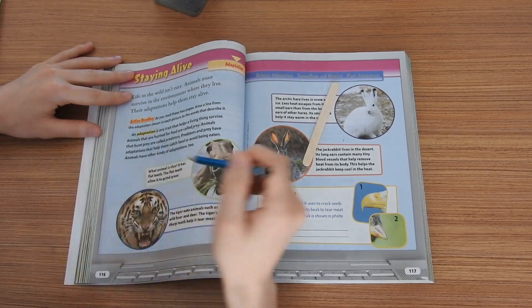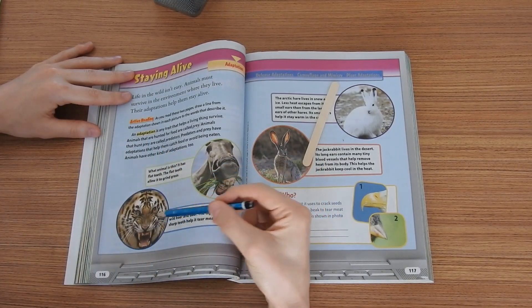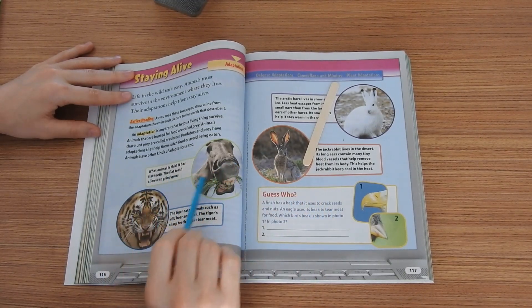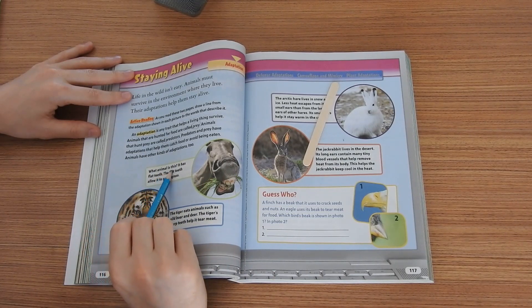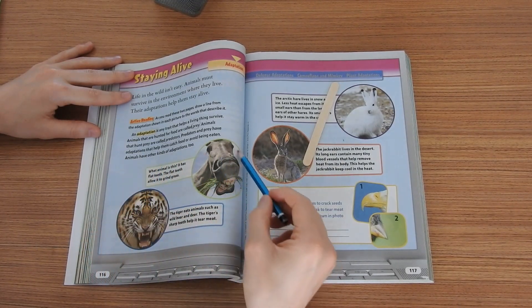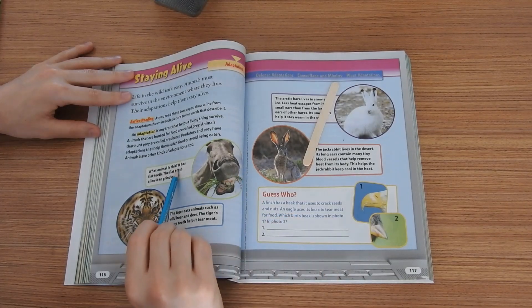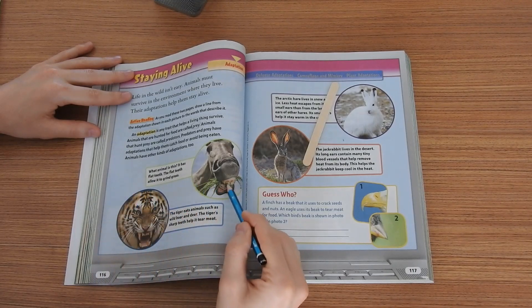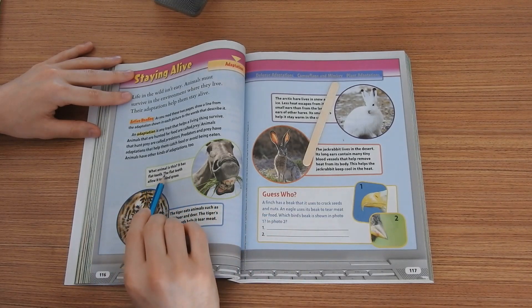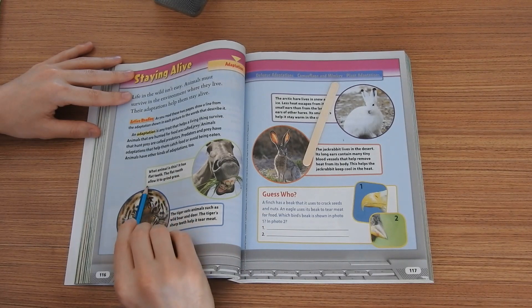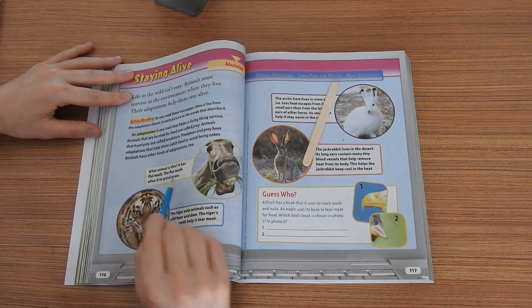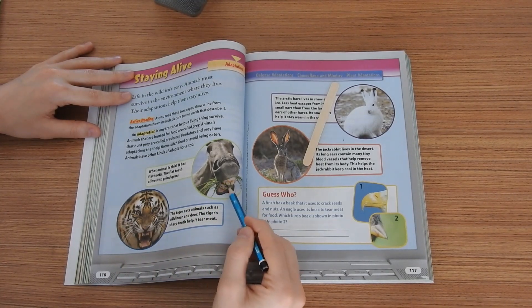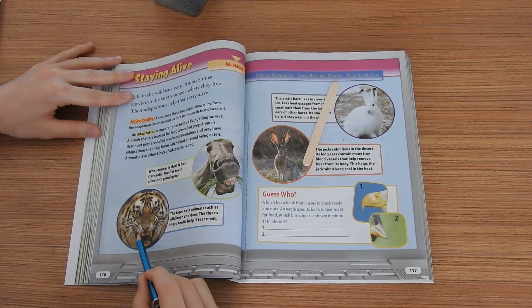Okay so now let's continue looking at these two pictures and let's read the text about this picture. What animal is this? I believe all of you know what animal is this. It has flat teeth. You see flat teeth. The flat teeth allow it to grind grass. As we see this animal is grinding grass.